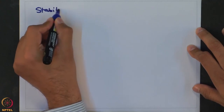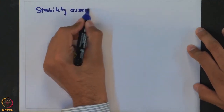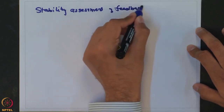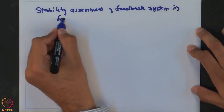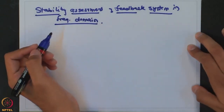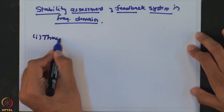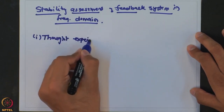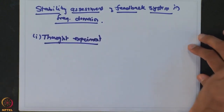Let us now see how we use this information to assess the stability of a feedback system. We will see stability assessment of a feedback system in the frequency domain. To do that, we will consider one thought experiment that will help us understand the stability conditions. In fact, we are going to see two stability criteria, and both are evident from this simple thought experiment.